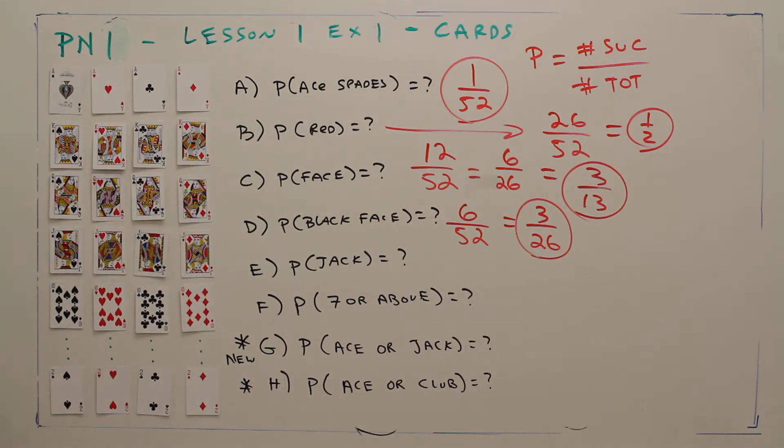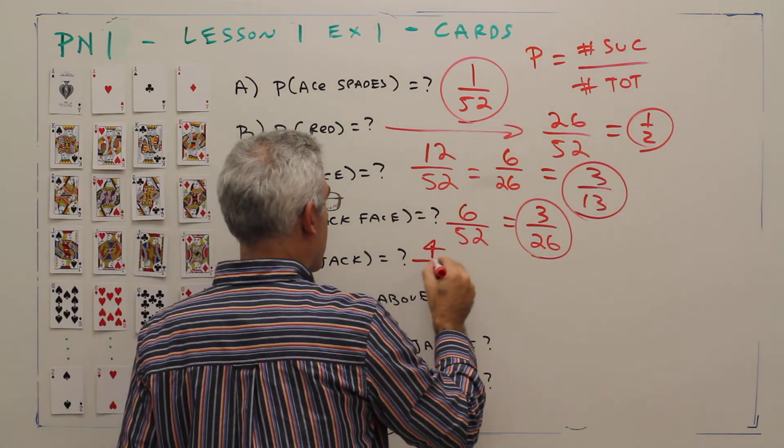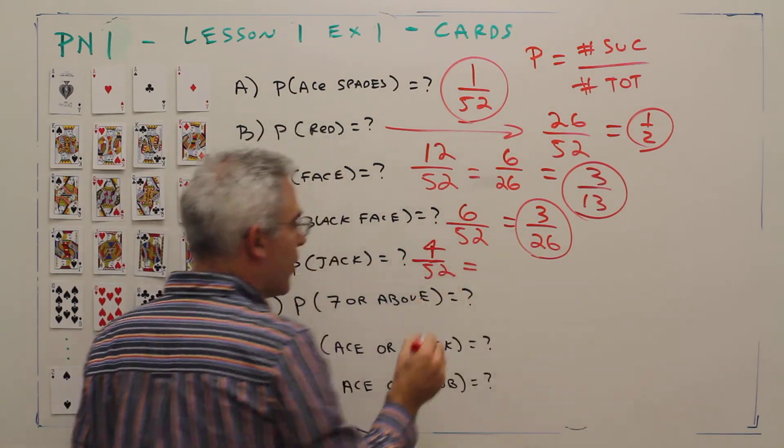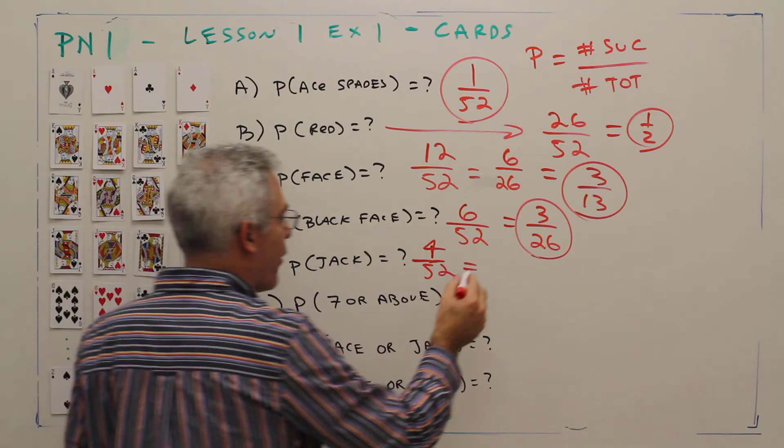Part E: the probability of a jack. There's four jacks out of 52. I'll just simplify that to be 1 over 13.